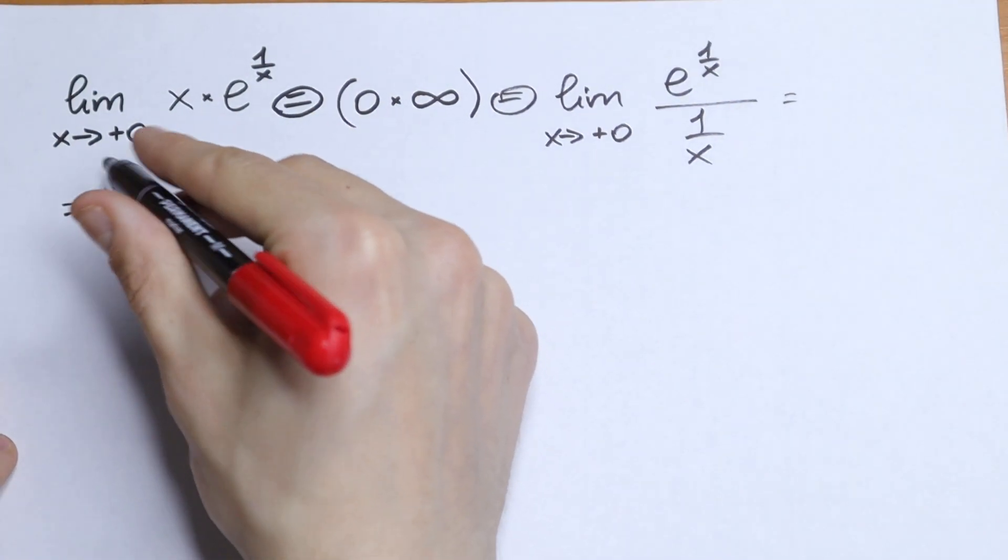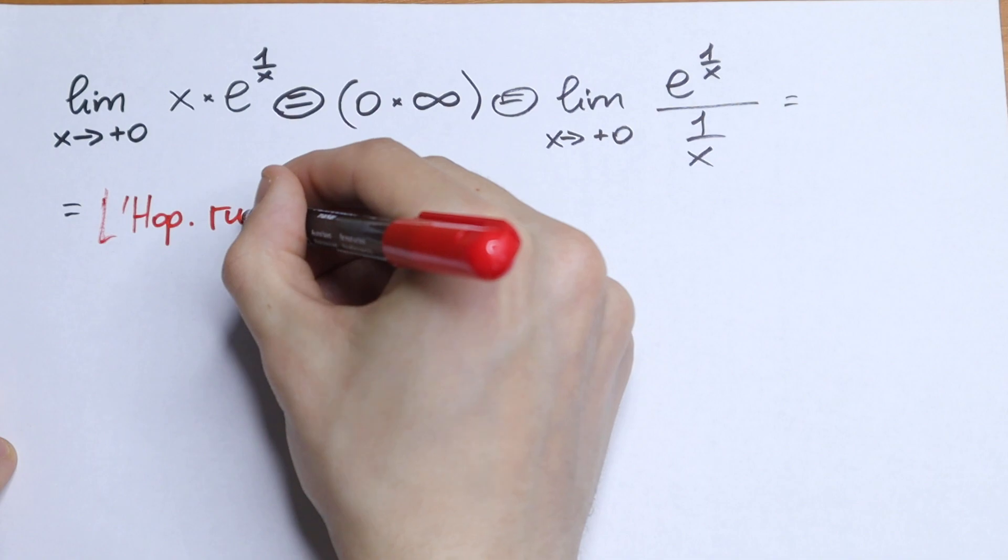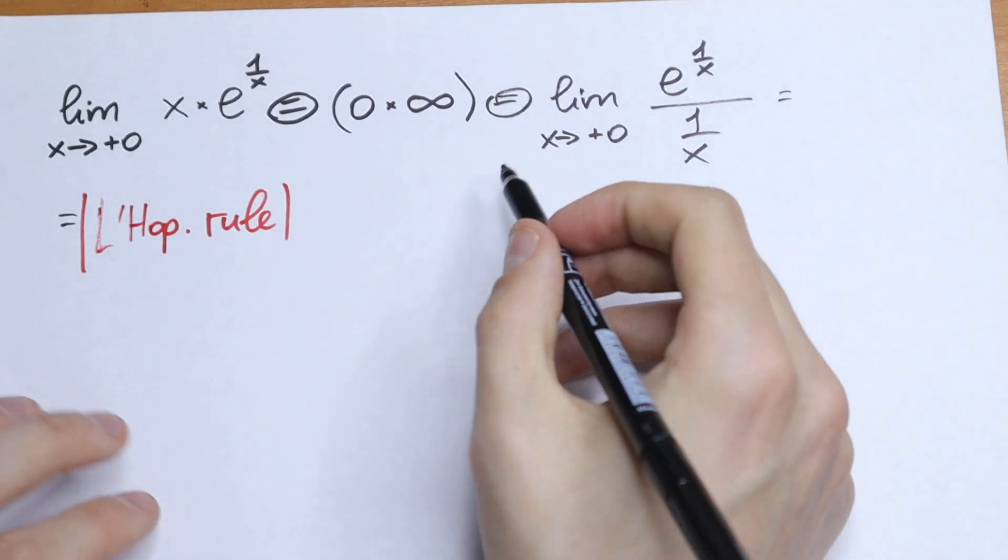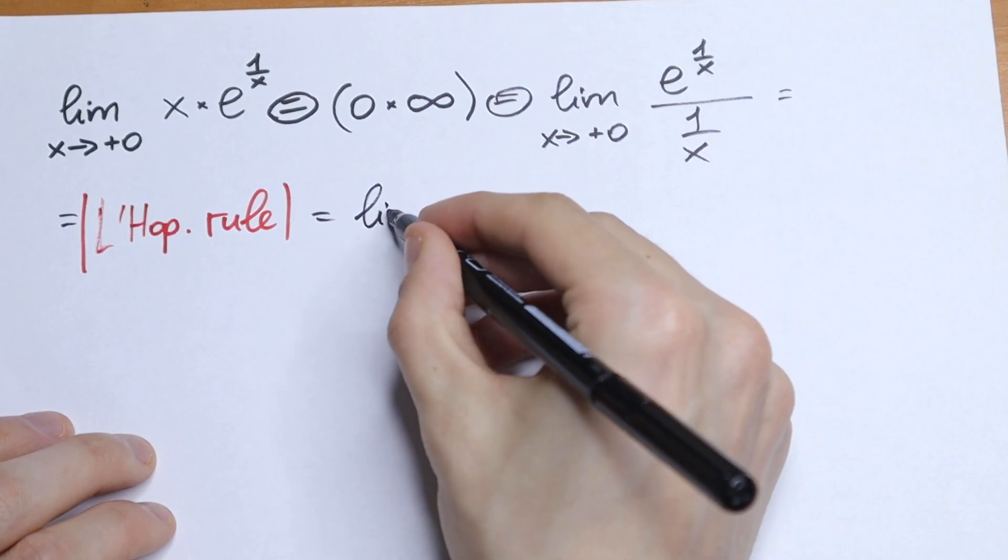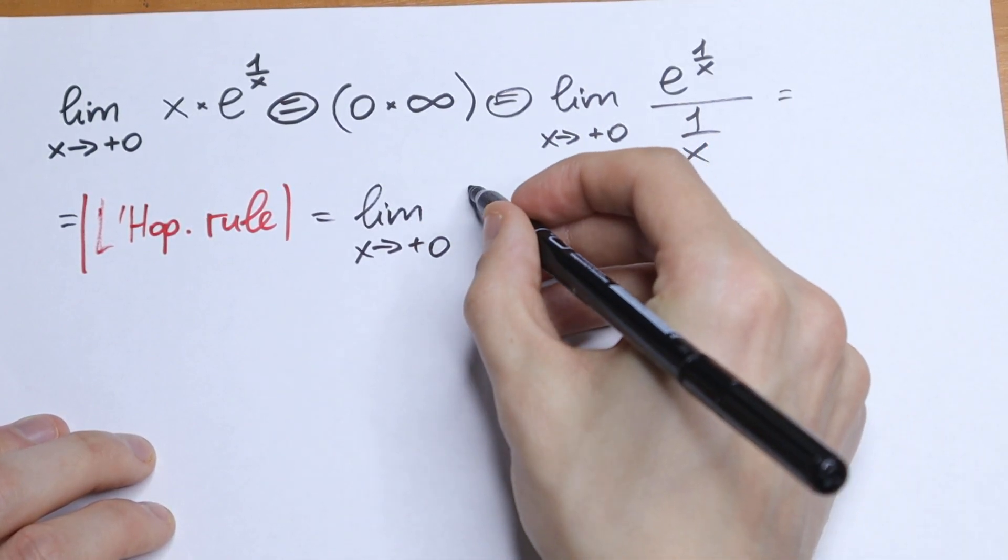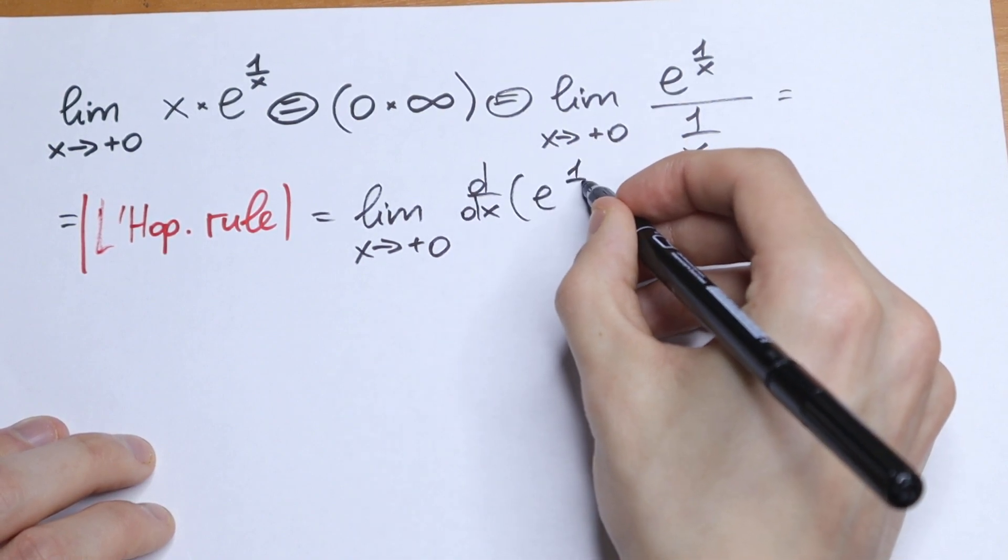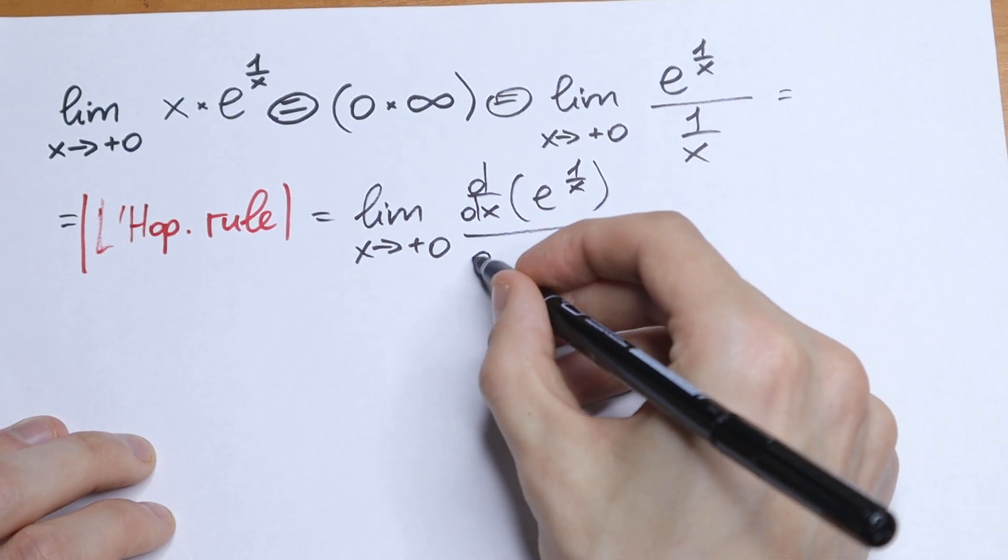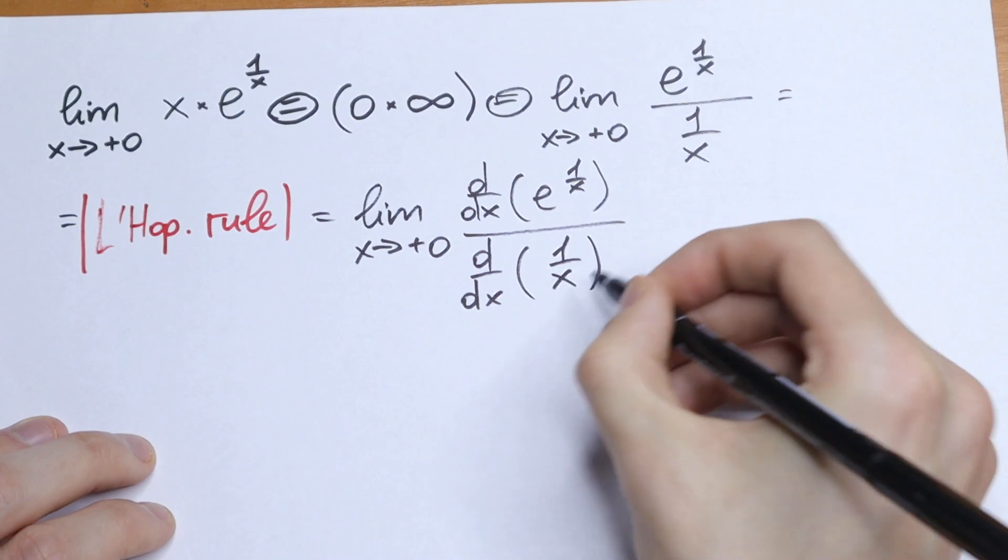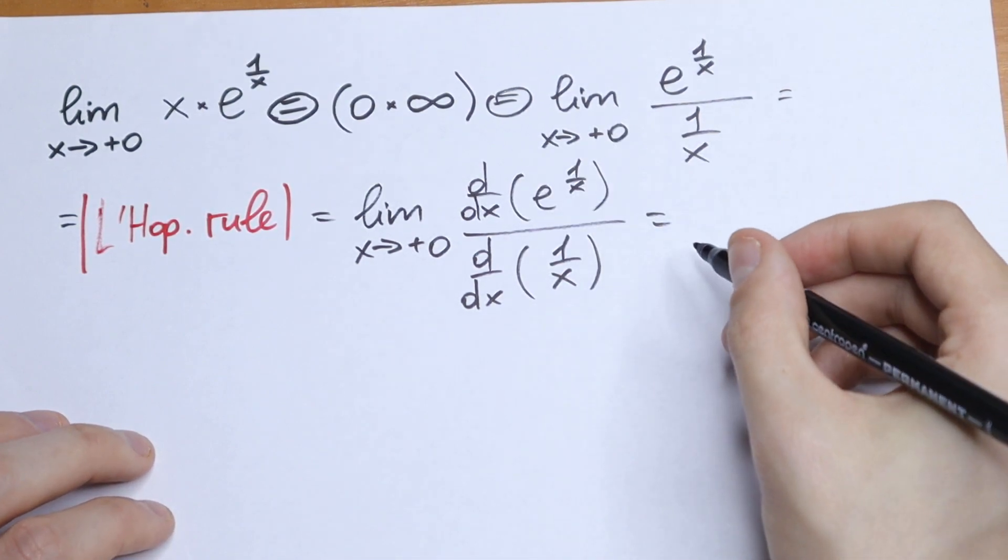So we will use L'Hopital's rule. And as a result we will have that this will be equal to the limit as x approaches 2 plus 0 of the derivative of our numerator e to the power 1 over x, divided by d over dx of 1 over x. So we need to find the derivative of our numerator and our denominator.